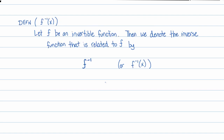That definition is for inverse function notation. Let f be an invertible function, which is just a function whose outputs come from unique or single inputs. Then we denote the inverse function related to f by this notation, or sometimes more often by this notation. f is the name of the function here. f of x is the value of the function evaluated at x. So its inverse has a name — f inverse — and f inverse of x is the inverse function value evaluated at x.